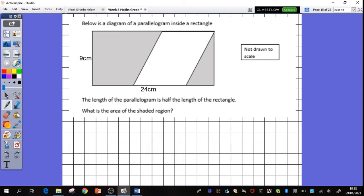So task 3 then. We're now looking at problems. Below is a diagram of a parallelogram inside a rectangle. The length of the parallelogram is half the length of the rectangle. So I can see that the base of the rectangle is 24 centimeters. So half of it must be 12 centimeters. So the base of my parallelogram must be 12 centimeters. I want to know the shaded region. Region, fancy word for area, shaded area.